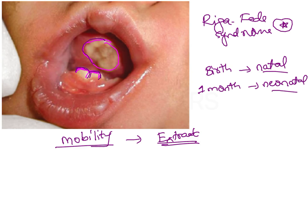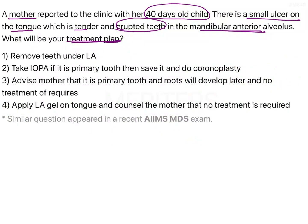This ulcer can then heal. Looking at the options in the question, the first option is to remove the tooth under LA. However, this is not a very conservative approach because there is a possibility that this could be a primary tooth. We cannot just go ahead and remove the tooth unless there is mobility seen, and no mobility is mentioned in the question — only that teeth have erupted in the mandibular anterior alveolus.